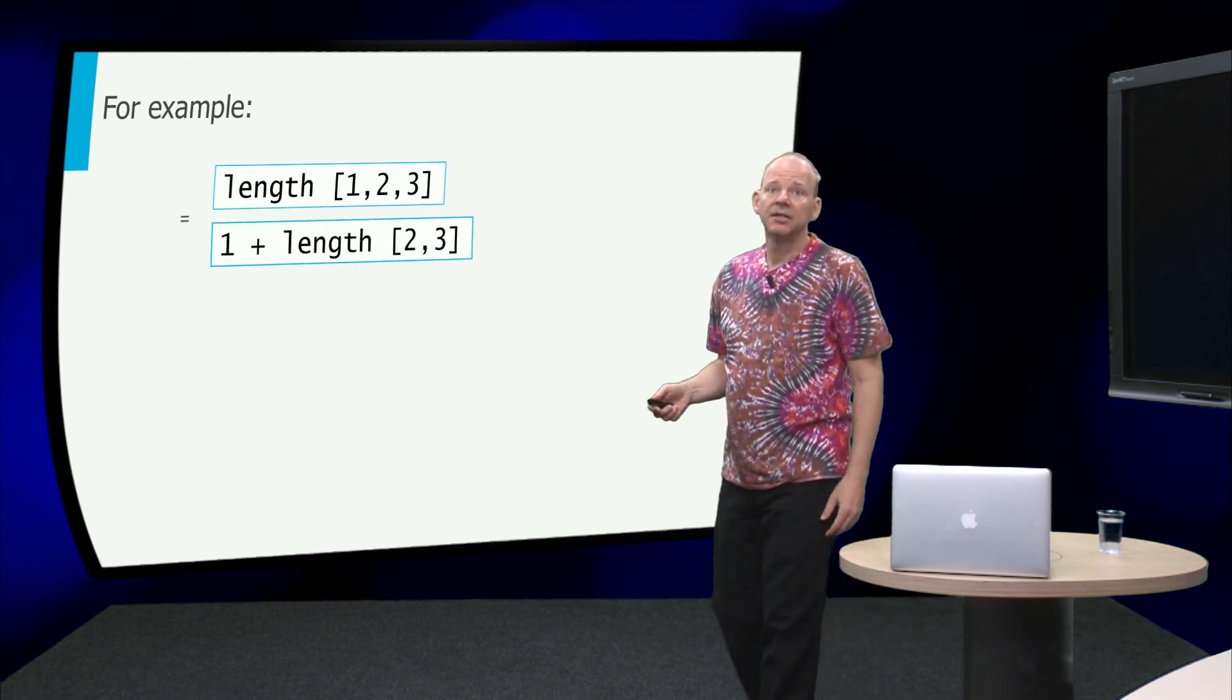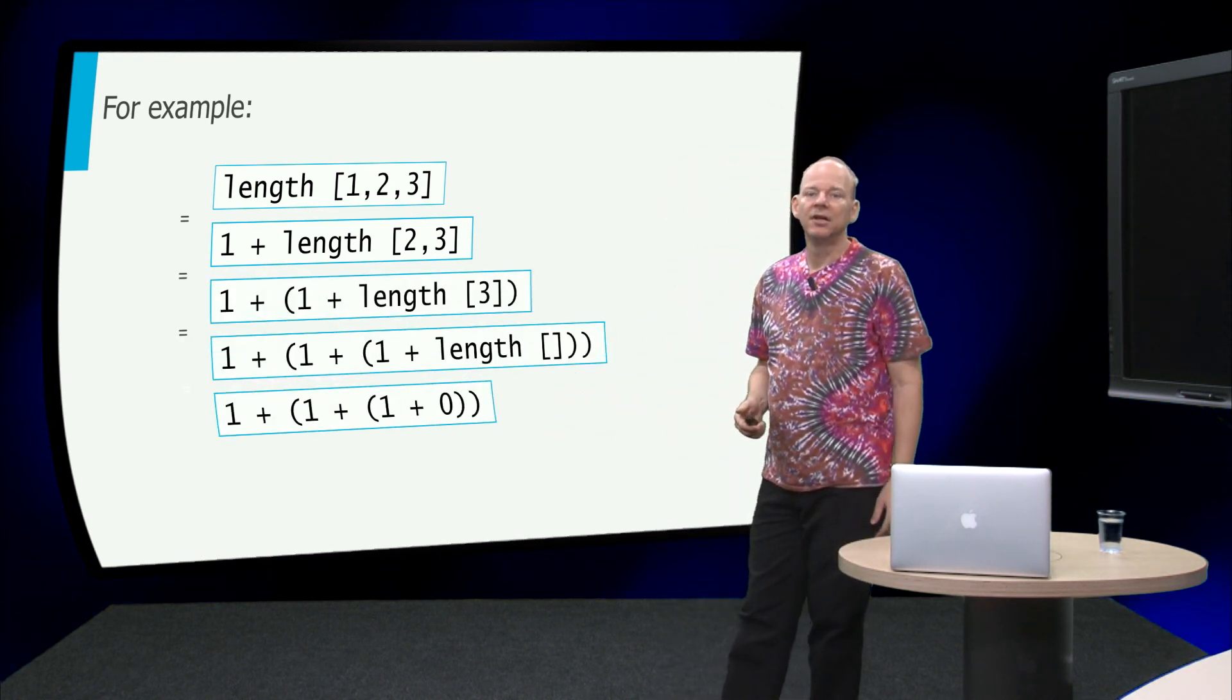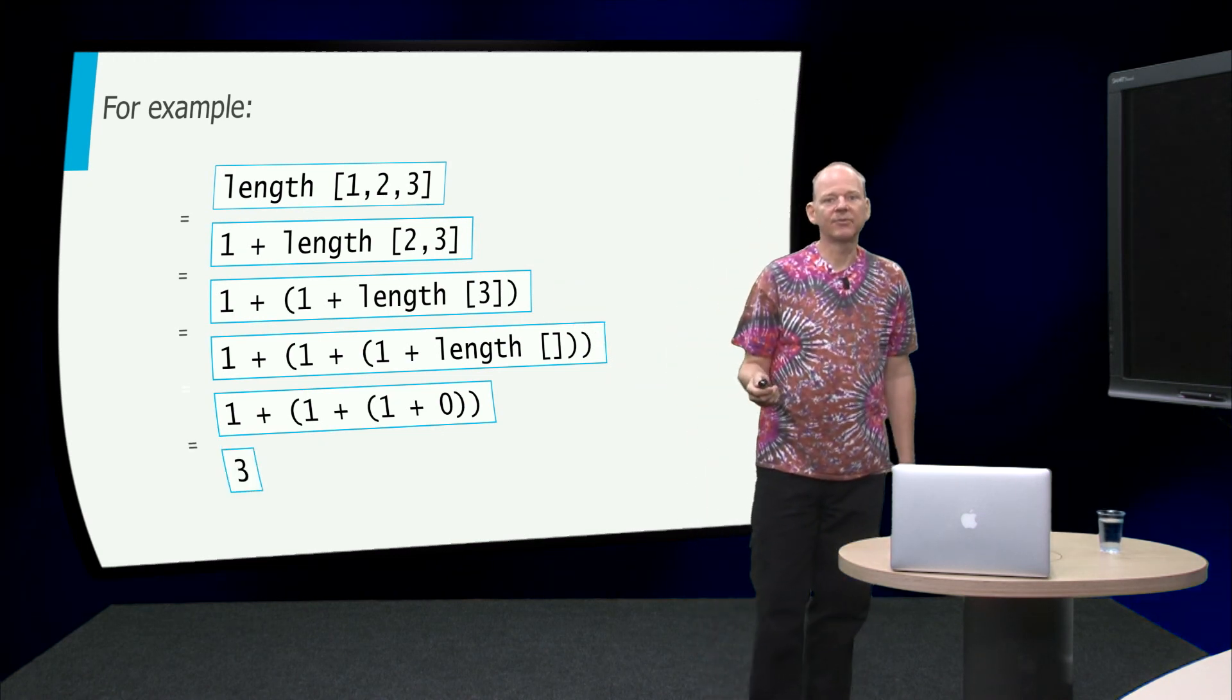So length of 1 to 3, 1 plus length of 2 to 3, unfold, unfold, unfold, until here. And then we add them up and we get the answer that we expect, 3.